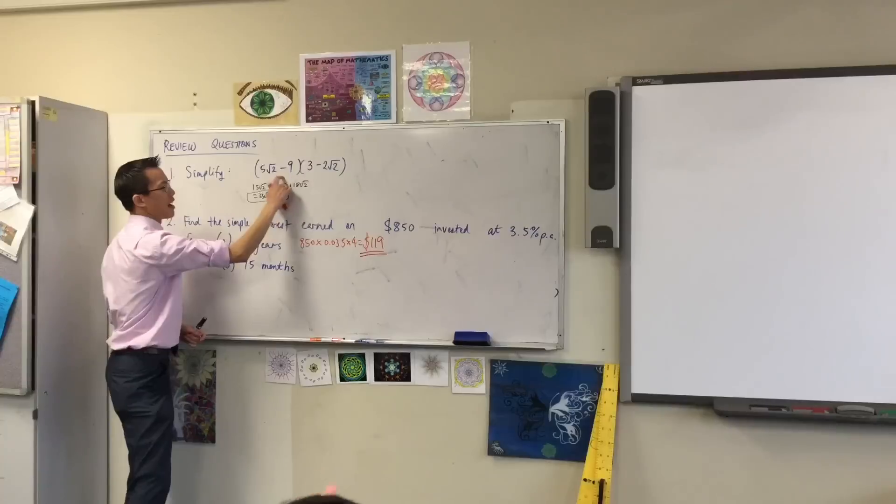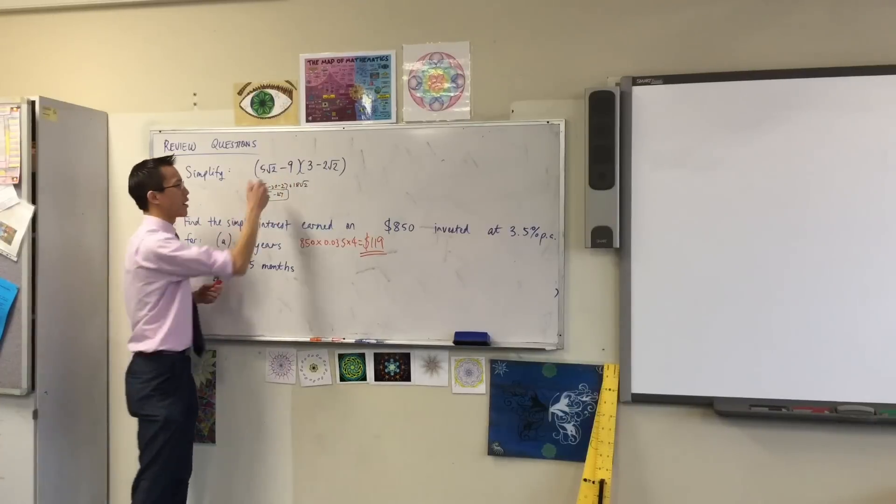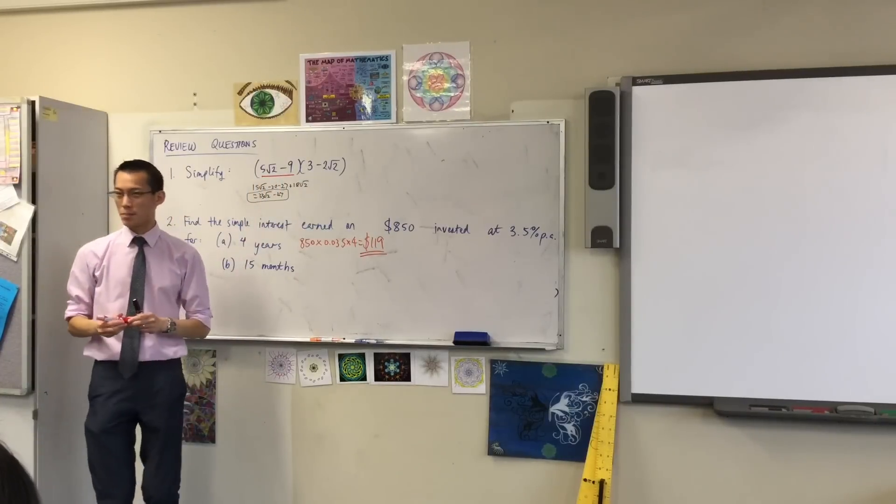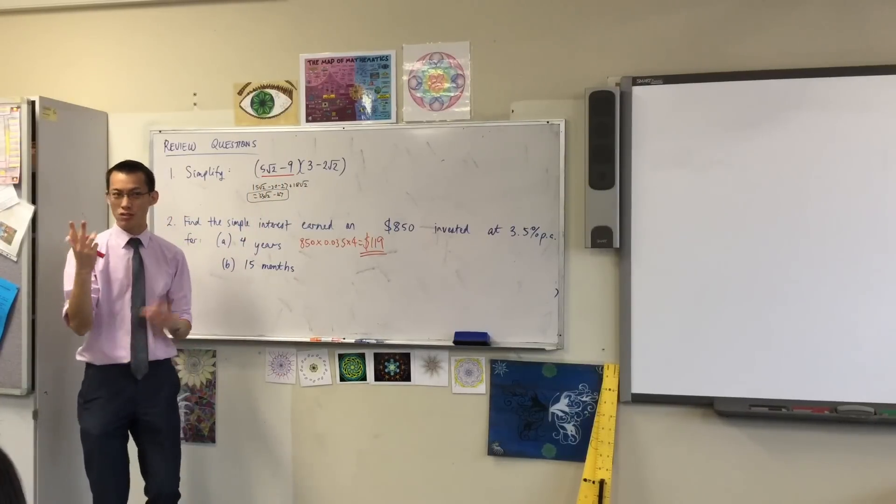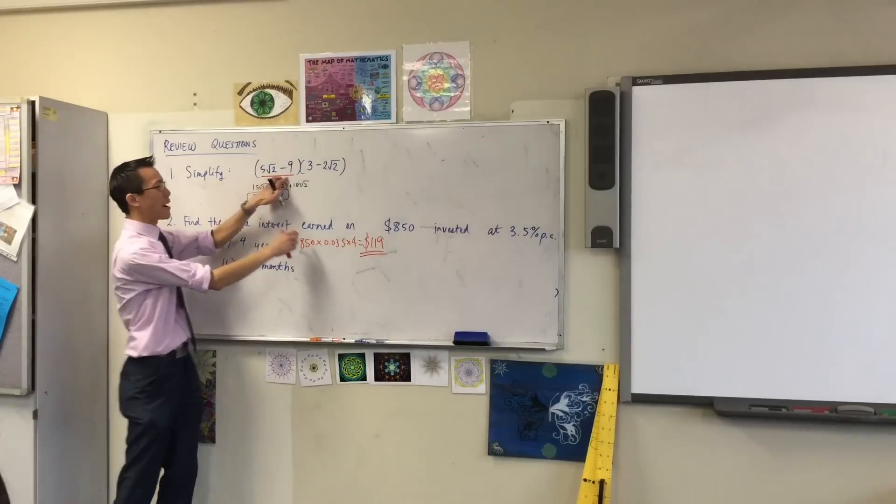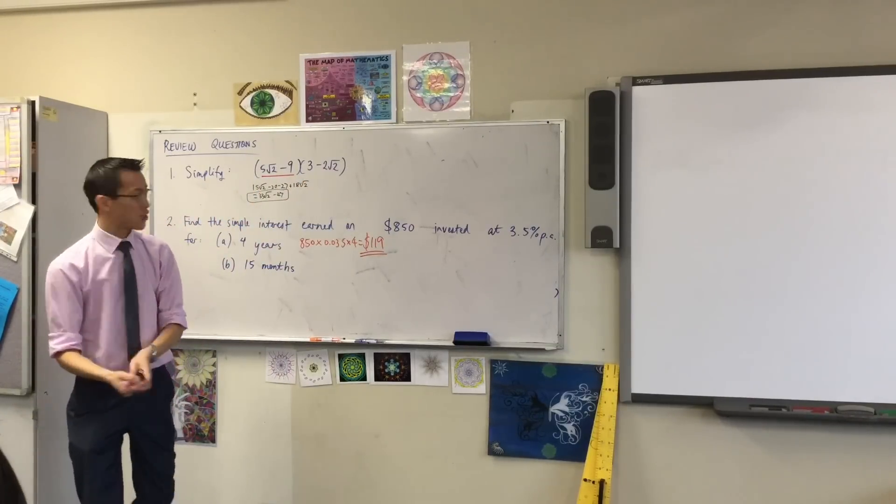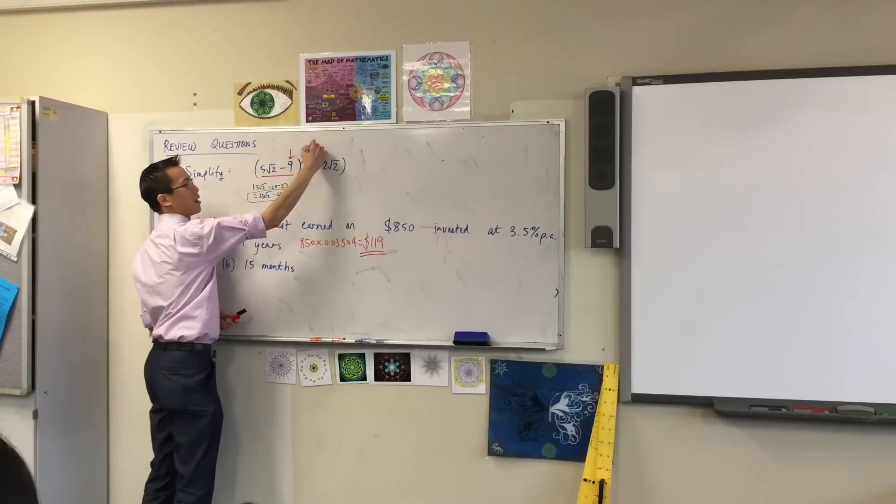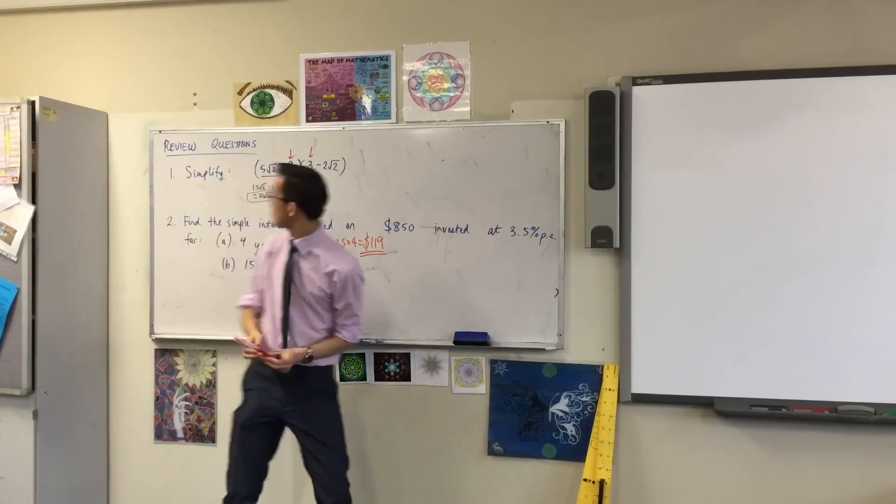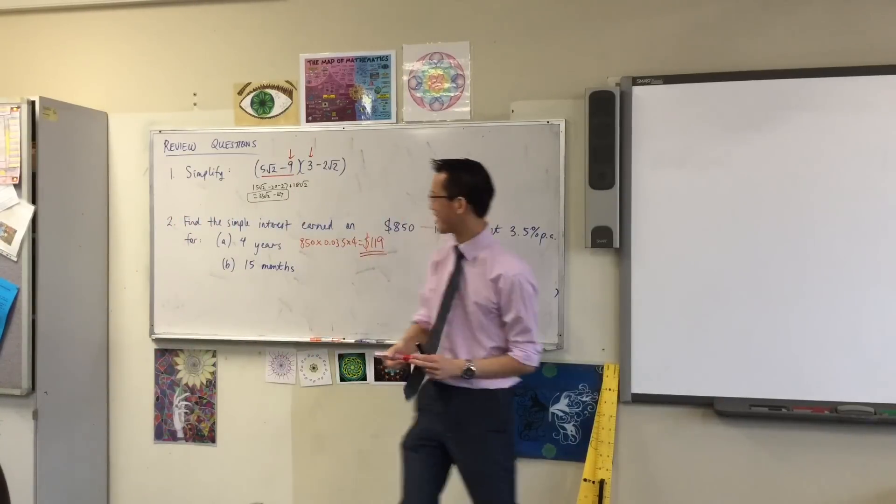These guys up here - what are these called? We call these binomials because there are two terms. You've got a binomial here, binomial here. Do you notice they have some common features? You've got some rational parts - the 9 or the 3 or the negative 9 and the 3.